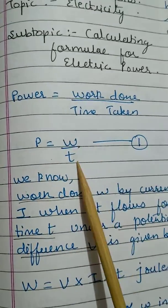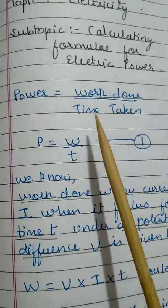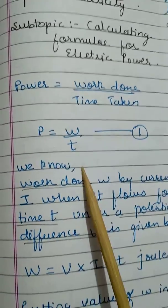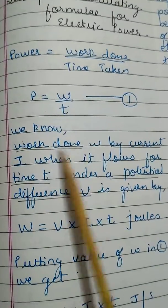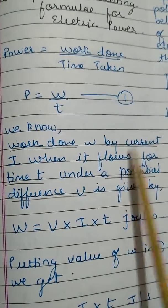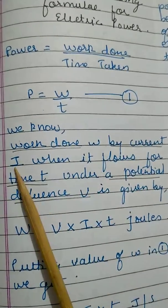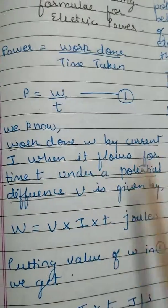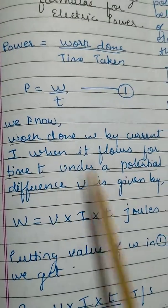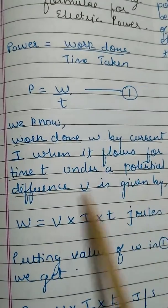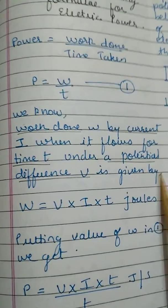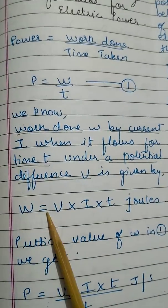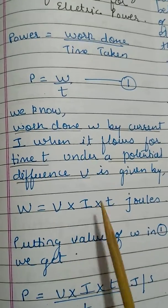So what is power? Power is work done upon time taken: P is equal to W upon T, where W is work done and T is time taken. We know work done W by current I when it flows for time T under a potential difference V.